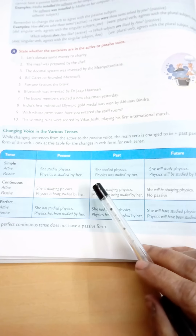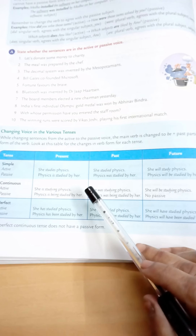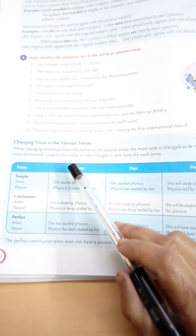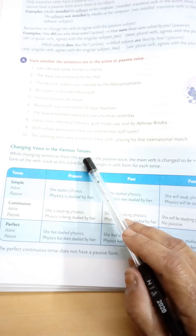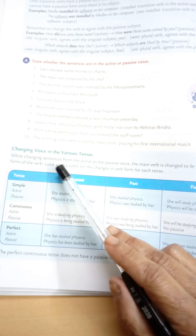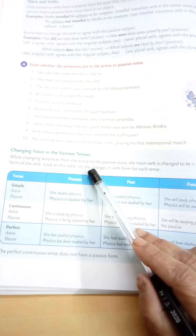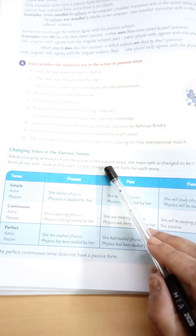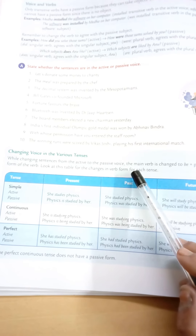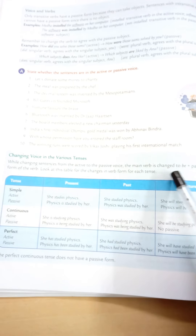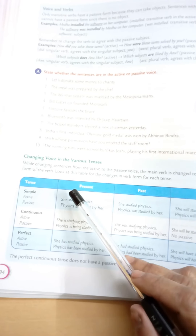Now, changing tenses from active to passive voice. While changing sentences from active to passive voice, the main verb is changed to 'be' plus the past participle form of the verb.